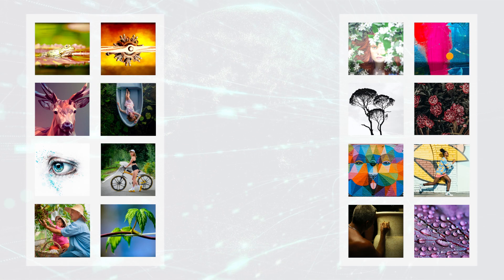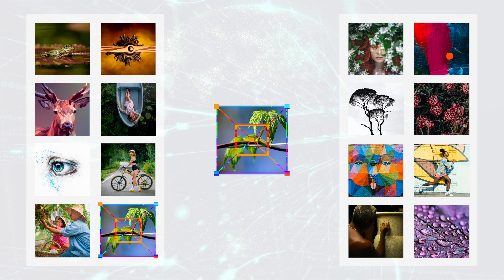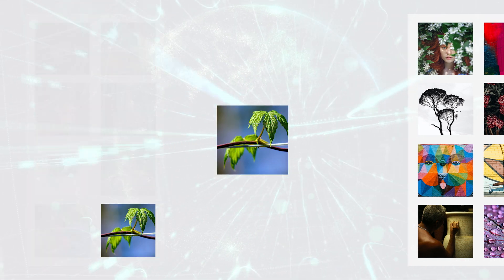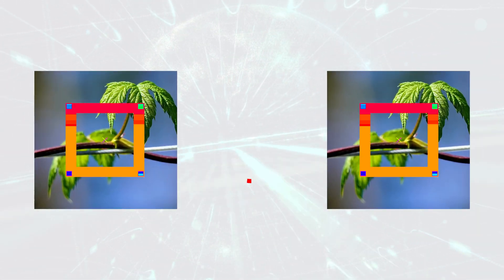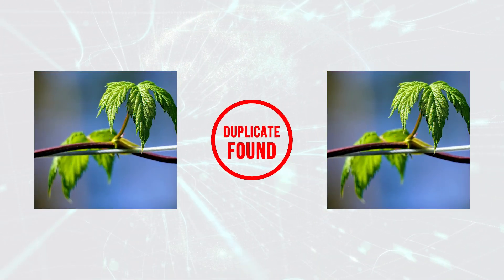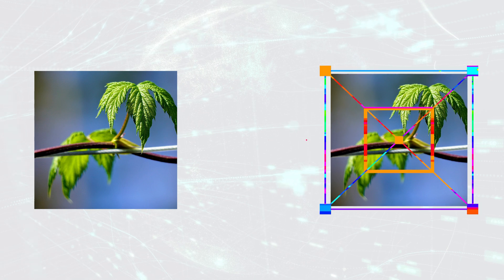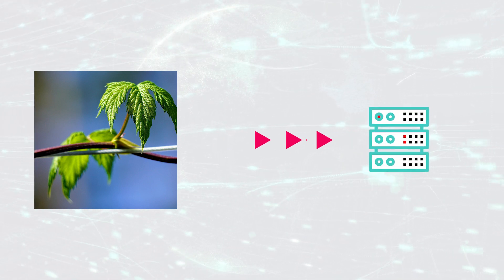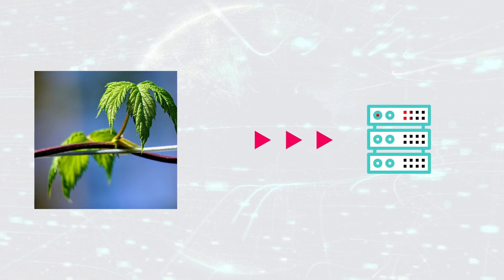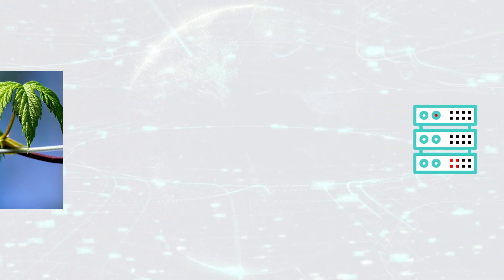If during the selection stage a similar image is detected, Pinterest then goes ahead and identifies the cluster where it is stored and updates that data in storage. And that's it.